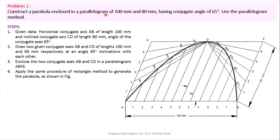Let us start. We have a parallelogram with 100 mm length. Draw a horizontal line of 100 mm and denote it AB. From point A, draw a line AE that is 80 mm long at a conjugate angle of 65 degrees. Conjugate angle means the angle between the horizontal and the inclined line must be 65 degrees. So if you take any angle between the horizontal line and any of the inclined lines, it must always be 65 degrees.